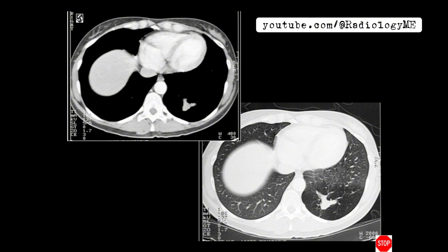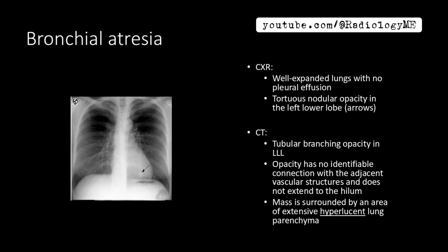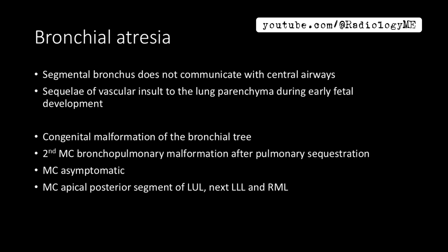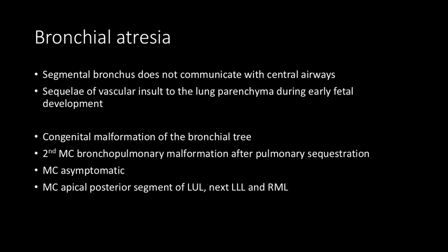So what's happening here? Bronchial atresia is a congenital condition where a segmental bronchus does not communicate with central airways. This is essentially a sequela of vascular insult to the lung parenchyma during early fetal development. It's a congenital malformation of the bronchial tree, and it's the second most common bronchopulmonary malformation just after pulmonary sequestration.